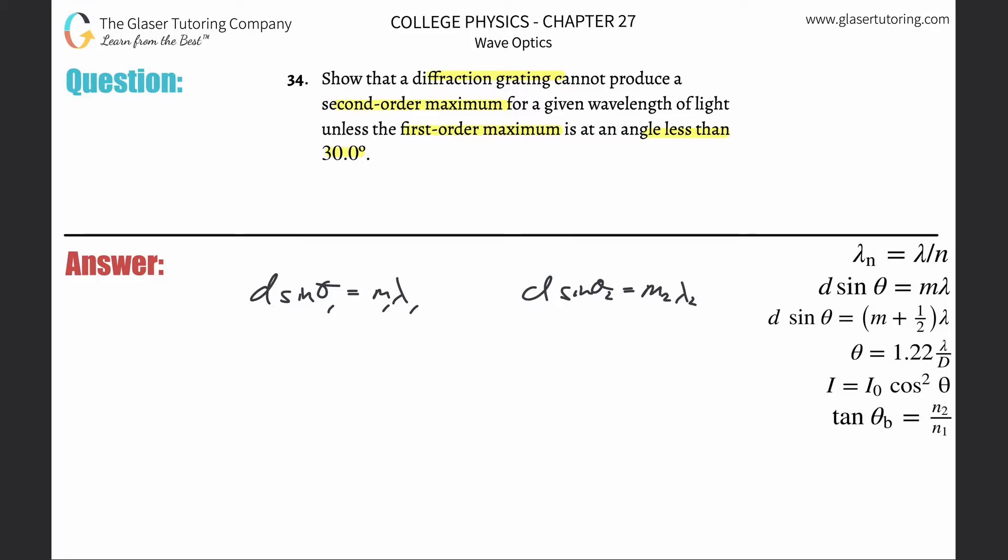And does it sound like the angle might be changing? Yeah, we got to show that it can't produce second order. So maybe the angles will be different. Does it sound like the orders are different? Well sure, one is m1, one is m2. What about the wavelengths? Well, the wavelengths here will be constant. Get rid of those as well.